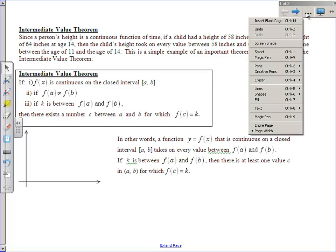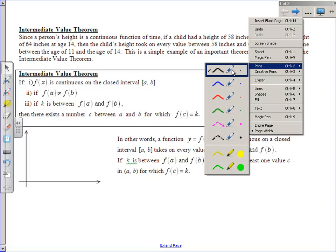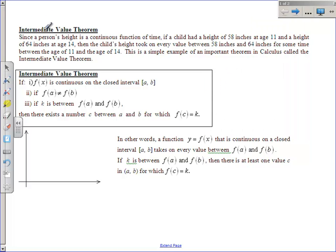This is a very important theorem where we can prove whether or not something exists. This example up here is about a person's height as a continuous function of time. If you had a height of 58 inches at age 11 and a height of 64 inches at age 14, three years later you've grown 6 inches. But this says that you took on every single height between 58 and 64 inches for some time value between the age of 11 and 14.